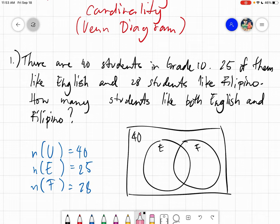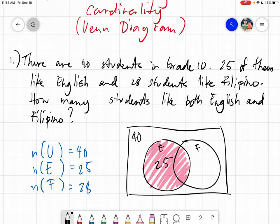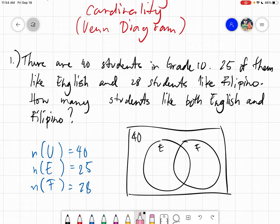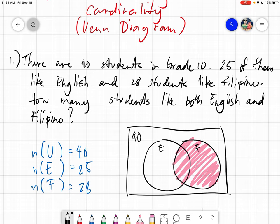So just for you to have an image, ano ba yung cardinality na 25? Pag sinabi natin students who like English, eto sila. So ibig sabihin may mga students rin na gusto ng English pero gusto rin ng Filipino. Pero hindi naman sinabi yun, ang sinabi lang those who like English, and all in all they are 25. Etong shaded part. The next one would be those who like Filipino, so eto yan. So etong mga may gusto ng Filipino, they are 28. Kasama itong part na to.